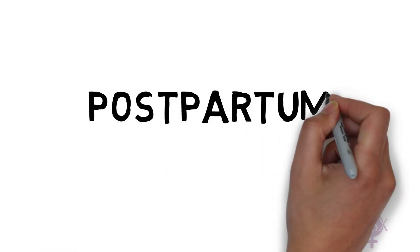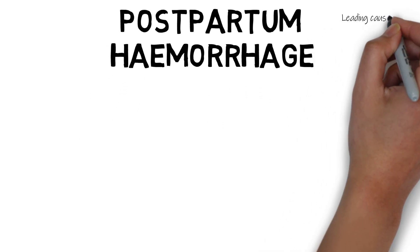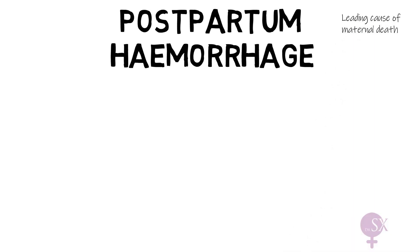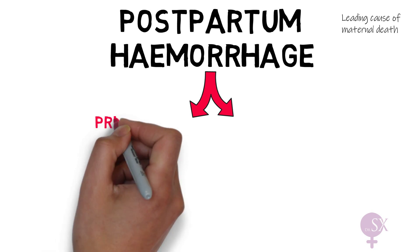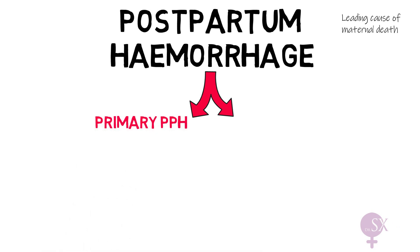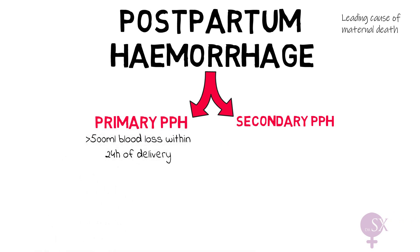In this video I shall be talking about postpartum hemorrhage. Postpartum hemorrhage refers to bleeding occurring after delivery and is the leading cause of maternal death worldwide. It is divided into two: primary PPH and secondary PPH. Primary PPH refers to bleeding of more than 500 mls occurring within the first 24 hours after delivery.